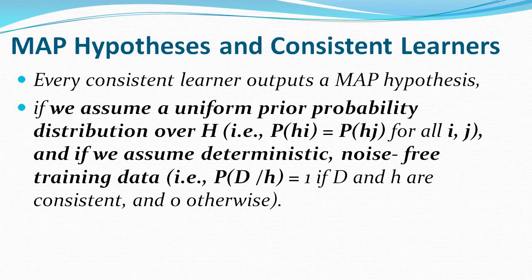Every consistent learner outputs a maximum a posteriori hypothesis. To establish this, we consider two assumptions: first, the prior probability distribution over every hypothesis is equal; and second, the training data is deterministic and noise-free. If a hypothesis is consistent with the training data, then P(D|H) equals 1, otherwise 0.